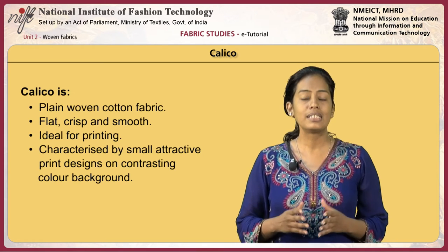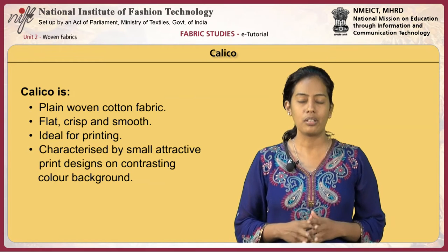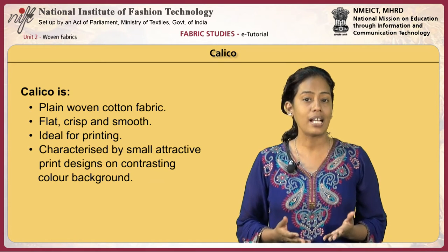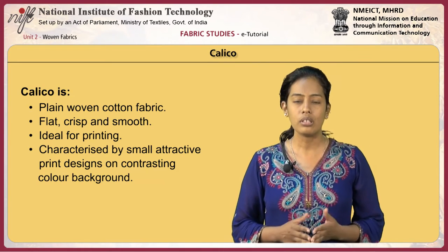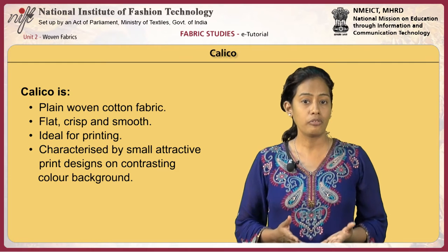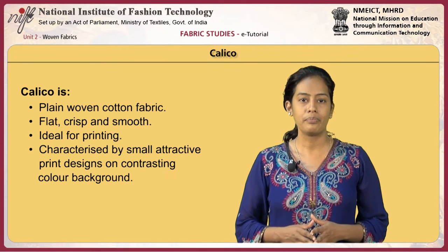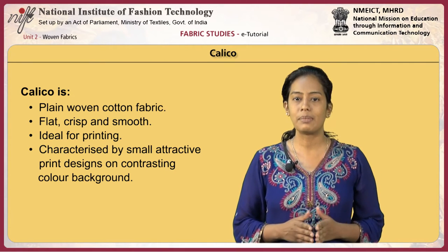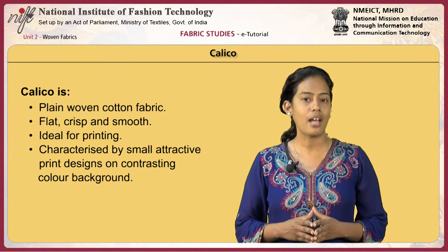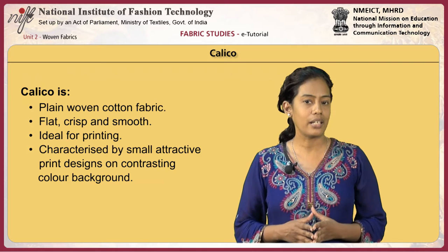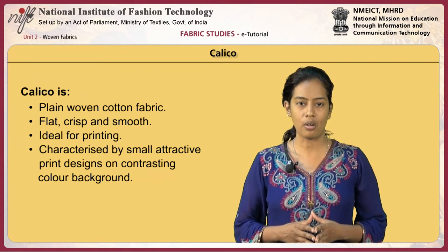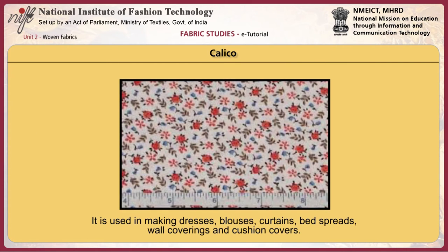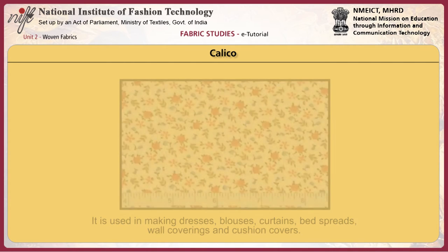Calico is a plain woven cotton fabric. The fabric is flat, crisp and smooth, and ideal for printing. Calico is characterized by small attractive print designs on contrasting colour backgrounds. It is used in making dresses, blouses, curtains, bedspreads, wall coverings and cushion covers.